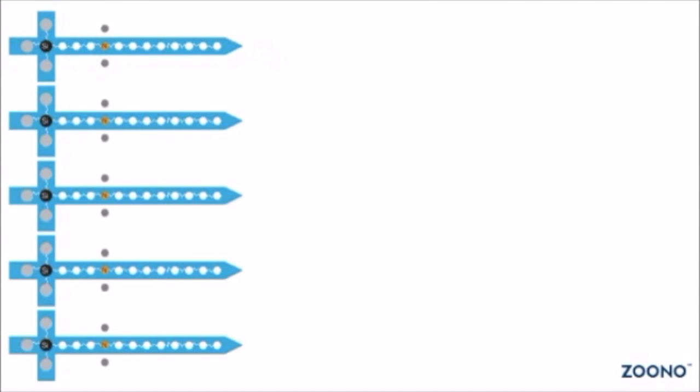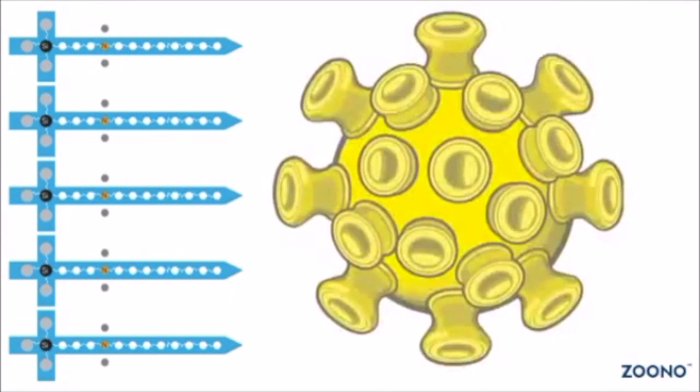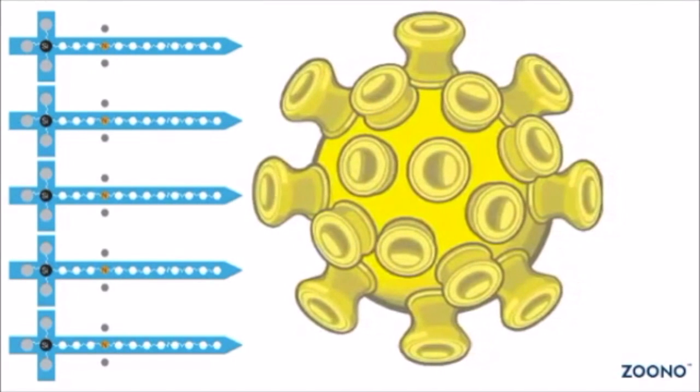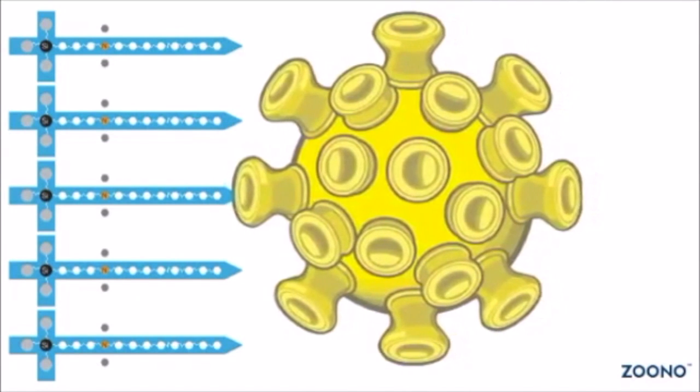Once the antimicrobial is bonded to the surface of an object, it is ready for defense. As the microbes come into contact with the surface, they are first punctured by the long molecular chain.